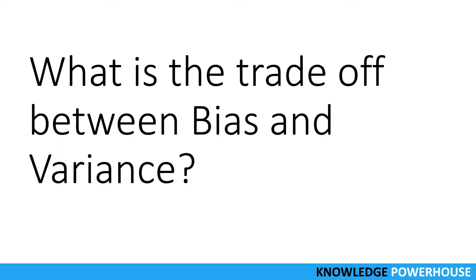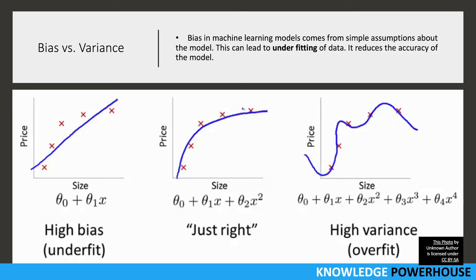The question is: what is the trade-off between bias and variance? Bias and variance are two sides of a coin, and there is a trade-off we have to make when coming up with a model. Bias in a machine learning model comes from simple assumptions about the model — if you come up with a very simple model, that can cause underfitting of data.